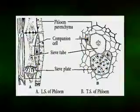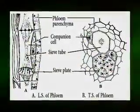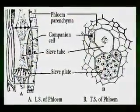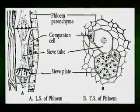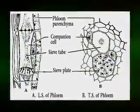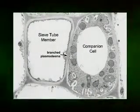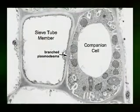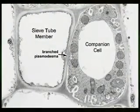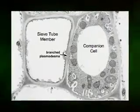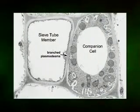Associated with the sieve tube members in the phloem of angiosperms are companion cells, many of which in the small veins of leaves are transfer cells that facilitate the loading of photosynthates into sieve tube members. Although several companion cells may be associated with a sieve tube member, each companion cell is derived from the same cambial initial as the sieve tube member with which it is in contact. Companion cells also accompany sieve tube members in the metaphloem of angiosperms as well as the protophloem of some but not all species.